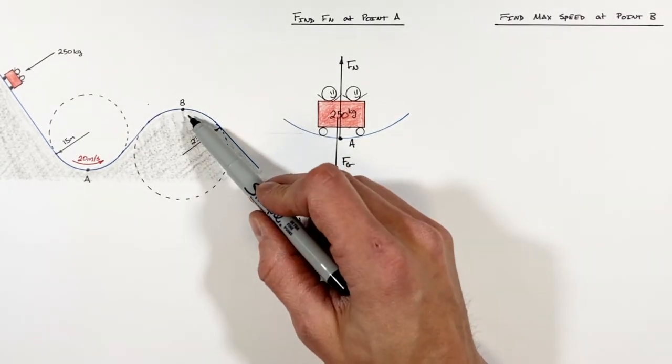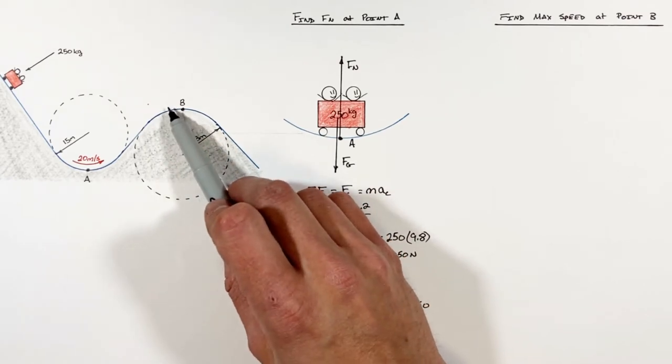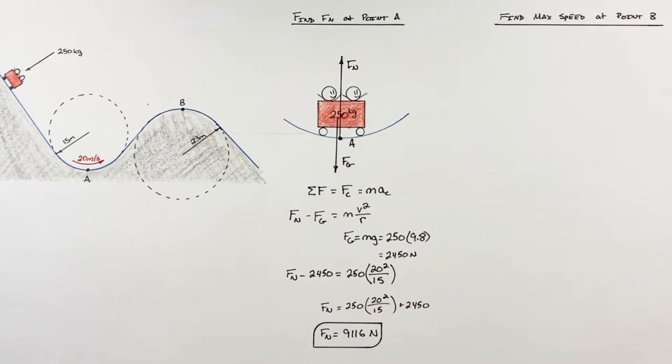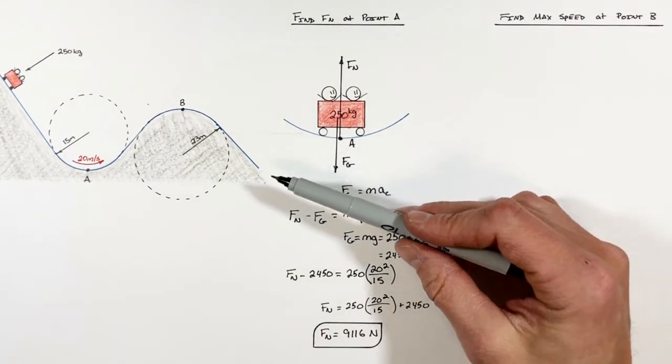Now moving on to point B. What we're trying to do here is solve for the maximum speed which the cart can travel over this point without flying off of the track. So again we're going to draw a free body diagram.